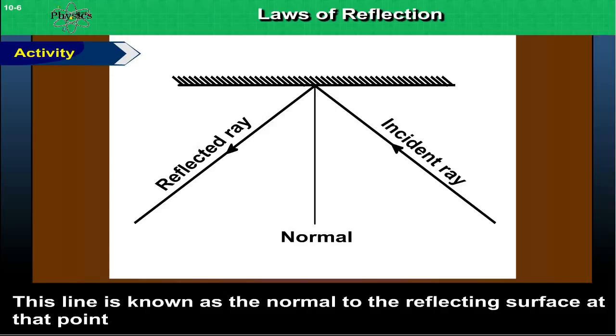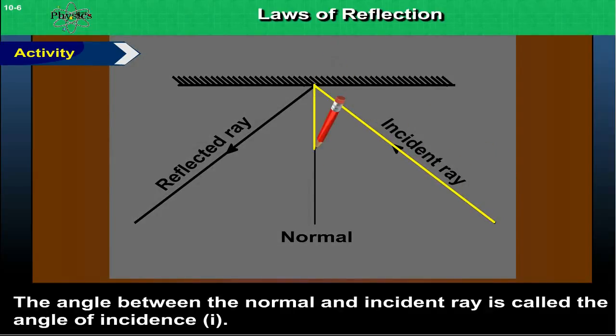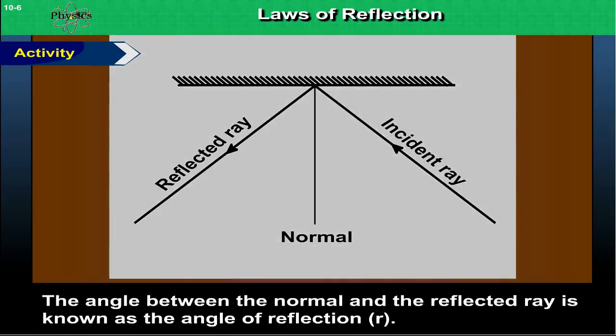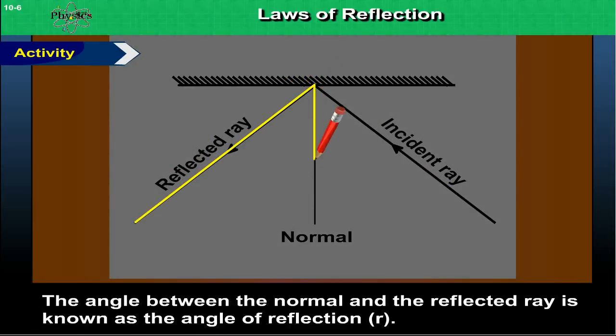The angle between the normal and incident ray is called the angle of incidence or you can call it I. The angle between the normal and the reflected ray is known as the angle of reflection or R.